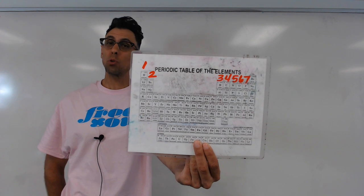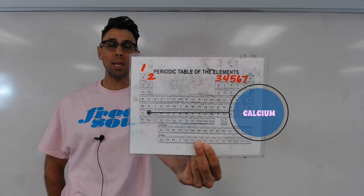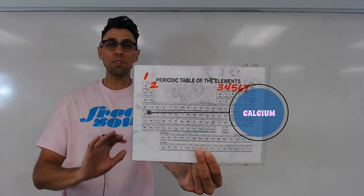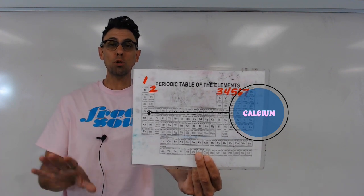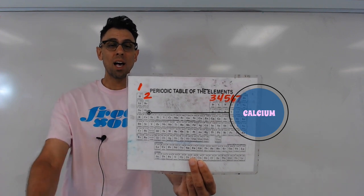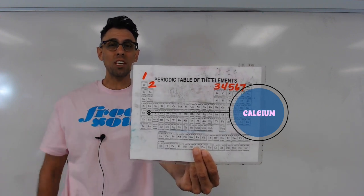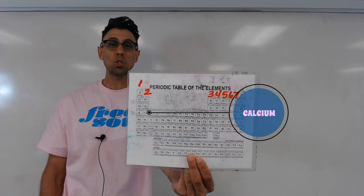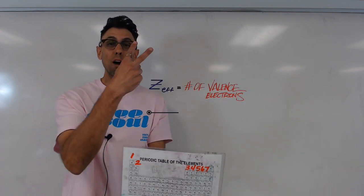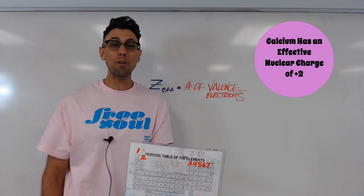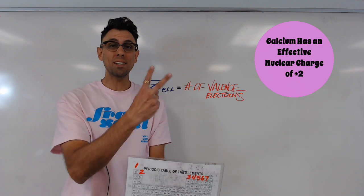what the effective nuclear charge of a calcium atom is, instead of looking at the atomic number, writing out the electron configuration, and subtracting the core electrons from the number of protons, I could simply note that calcium has 2 valence electrons, which means those electrons will feel the pull of 2 of the protons in the nucleus. Calcium's effective nuclear charge is positive 2.